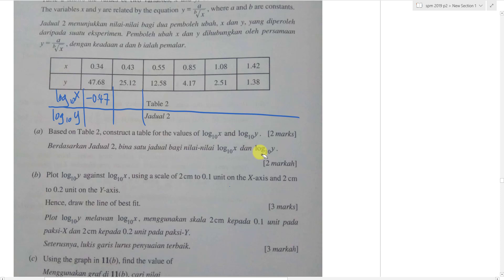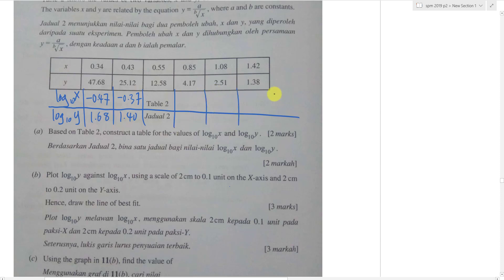I'll show a sample calculation. For x = 0.34: log₁₀(0.34) ≈ −0.47. For y = 47.68: log₁₀(47.68) ≈ 1.68. For x = 0.43: log₁₀(0.43) ≈ −0.37. For y = 25.12: log₁₀(25.12) ≈ 1.40 — and so on. I recommend using 2 decimal places since the scale is 0.1 units.